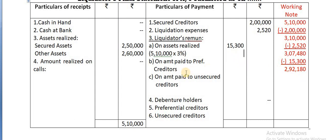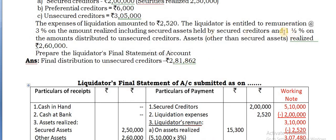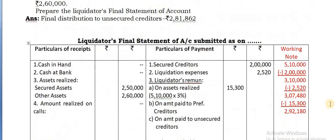From this, what you have to take next? Preferential creditors. The amount payable to the preferential creditors is 6,000, and the other 1.5% is on the preferential creditor payment of 6,000.